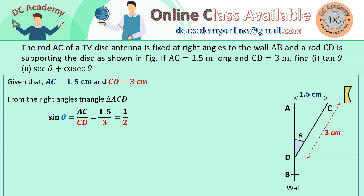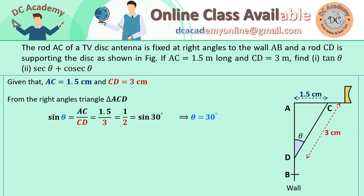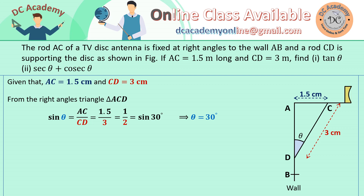So 1.5 divided by 3 is 1/2. We know that sin 30° is 1/2, so we can write sine theta equals sine 30°, hence theta must be 30 degrees. Once theta is obtained, any value — tan, sine, cos, sec, cosec — we can easily find.